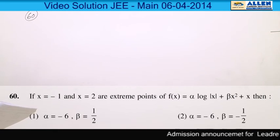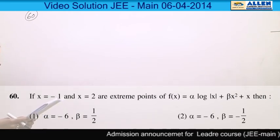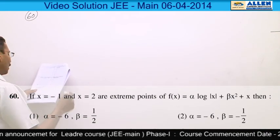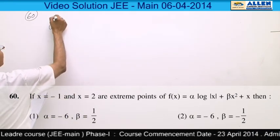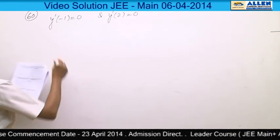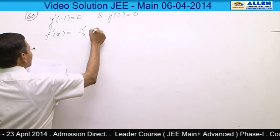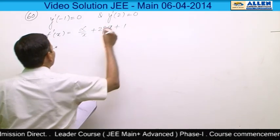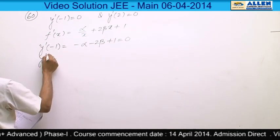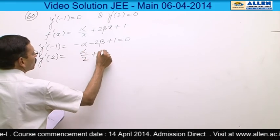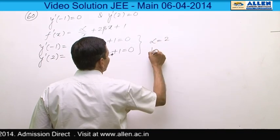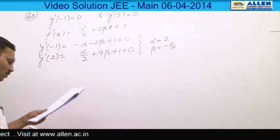Question number 60. This is an application of derivatives problem. Since x = −1 and x = 2 are extreme points, f′(−1) = 0 and f′(2) = 0. Differentiating gives f′(x) = α/x + 2βx + 1. Setting up and solving both equations yields α = 2 and β = −1/2. The correct option is 3.